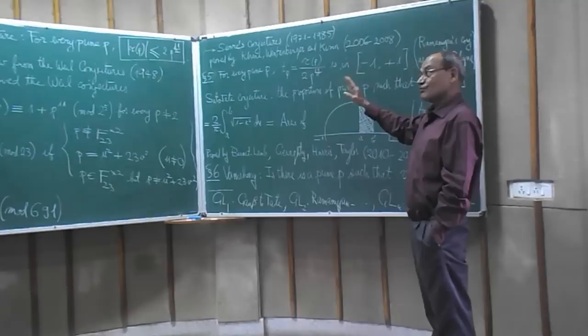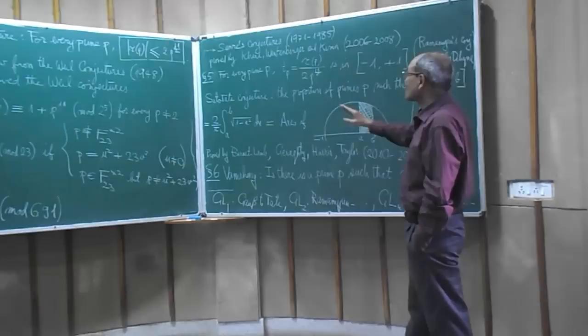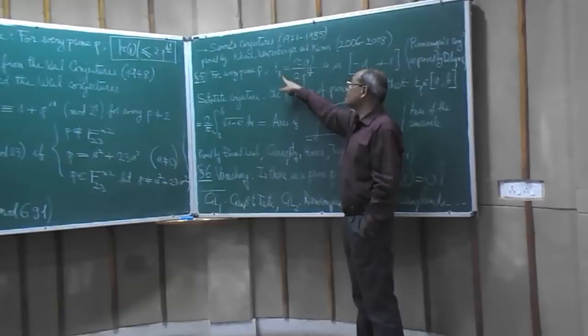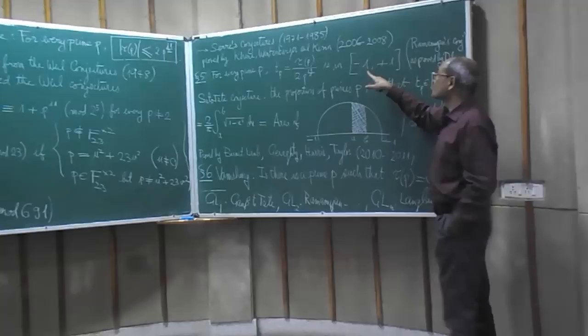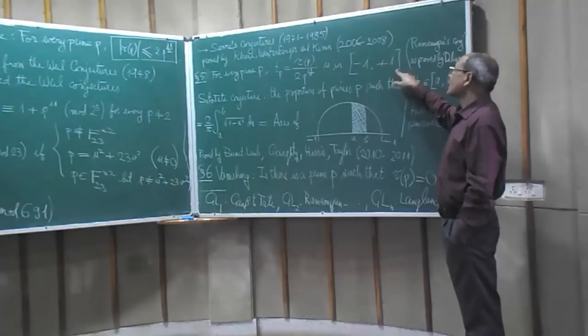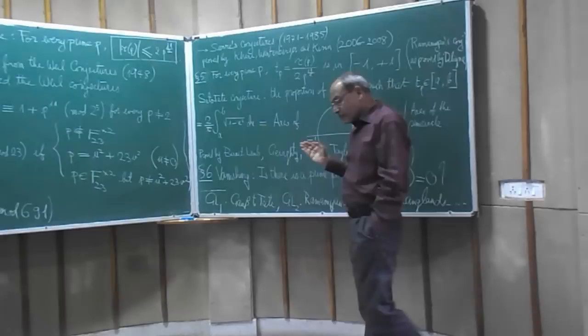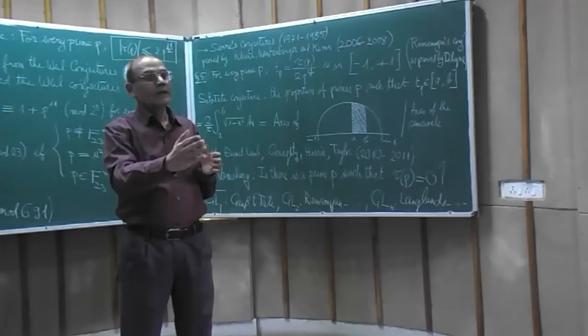And the last observation about this tau function which Ramanujan didn't quite make is something called the Sato-Tate conjecture. Now you look at this number Tp for every prime p which is tau p divided by 2 times p to the 11 over 2. You know that it's going to be in the interval minus 1 to plus 1 as a consequence of Ramanujan's conjecture which is proved by Deligne. And therefore you can ask how are these Tp's distributed in this interval as p varies.